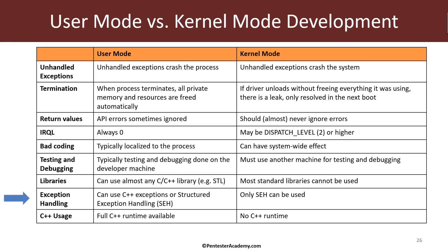Exceptions are a way to handle errors in user mode. In user mode you can use C++ exceptions, or higher-level language mechanisms like those in C# or Java, or the internal Windows mechanism called structured exception handling (SEH). In kernel mode, there is no C++ runtime, so the only option is SEH. We'll probably see one example of SEH in this course and possibly more in a future course.